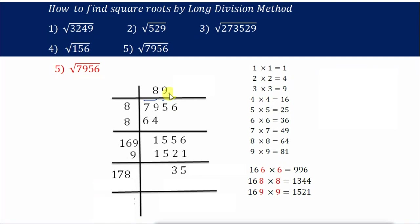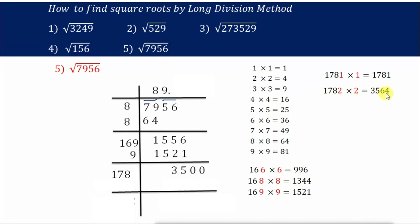So we choose 169×9=1521. We already have 16 here, so 169×9=1521. Add 9 here: 169+9=178. Subtract: 1556 minus 1521 gives 35. Now 35 is smaller than 178, so put a decimal point and take two zeros. We have 178 here. Start pairing: 1781×1=1781, 1782×2=3564. Since 3564 is greater, we go with 1781×1=1781.